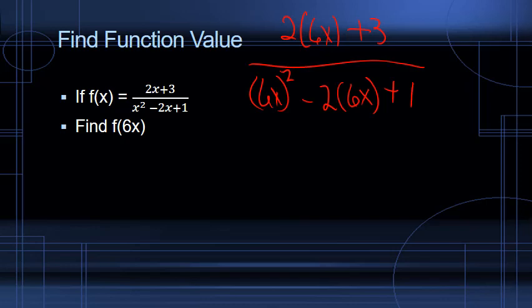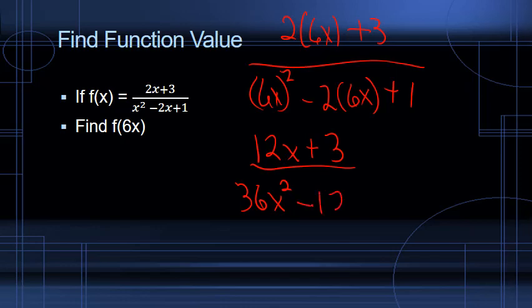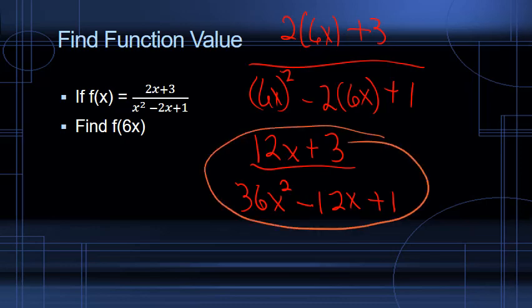Let's work on the numerator first. 2 times 6x gives us 12x plus 3. For 6x squared, we've got to square both the 6 and the x, giving us 36x squared. Then negative 2 times 6x gives us minus 12x plus 1. We can't combine any like terms. So f of 6x equals 12x plus 3 over 36x squared minus 12x plus 1.